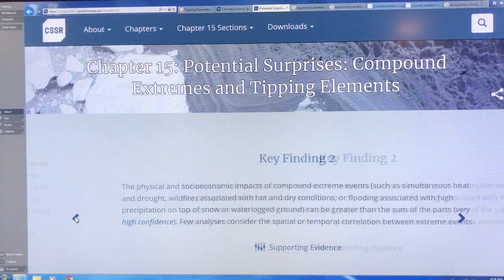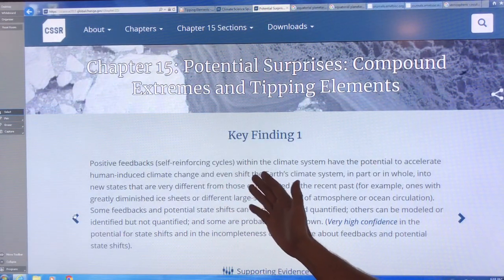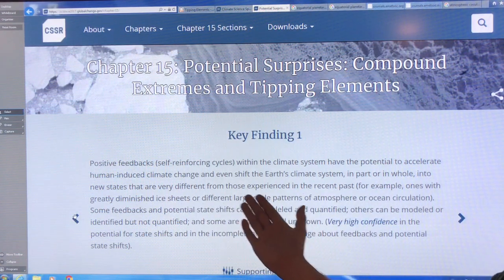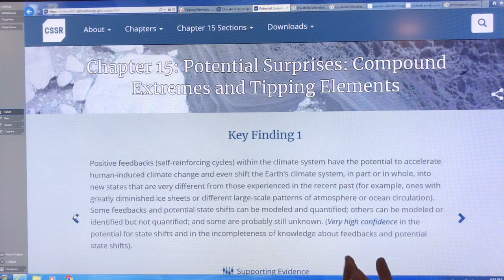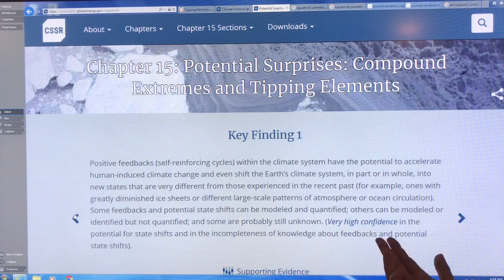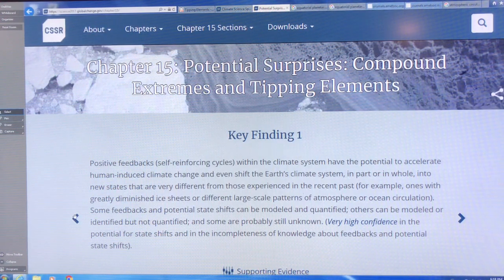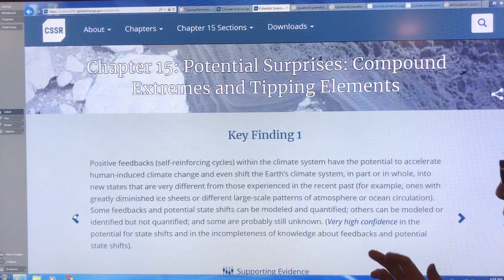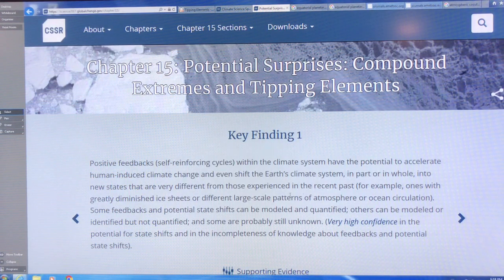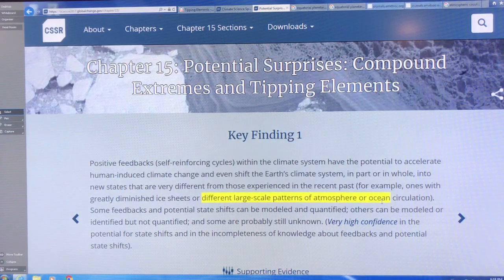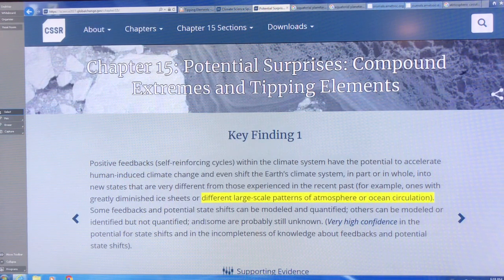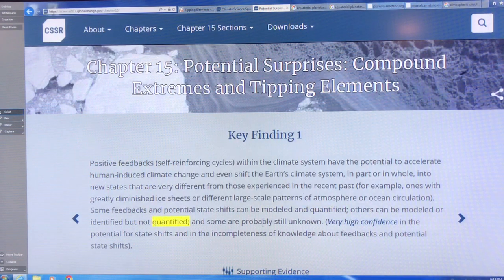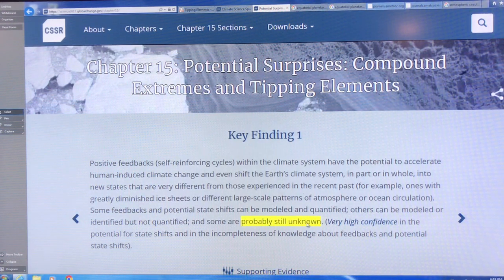These positive feedbacks are self reinforcing cycles, they can accelerate human induced climate change and shift the Earth's climate system in part or in whole into new states that are very different from those experienced in the recent past, or in human history. We can have an Earth that is, so forget about this expression, the new normal, we're undergoing an abrupt change, and we're nowhere near the new normal. The new normal is a world that's much, much warmer than this world. So some of the new states might be greatly diminished ice sheets, different large scale patterns of atmosphere and ocean circulation. So some of the feedbacks in causing these state shifts can be modeled and quantified. Others can be modeled or identified, but not quantified, and some are probably still unknown. Very high confidence in this.